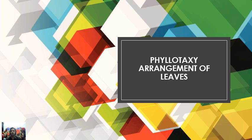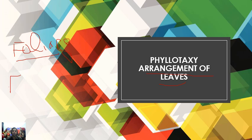Next is phyllotaxy, which is the arrangement of leaves on the stem. There are two types of leaves: foliage leaves, which are the green leaves, and floral leaves, which include petals, sepals, and carpels. The arrangement of foliage leaves is called phyllotaxy, the arrangement of floral leaves in a bud is called prefoliation, and the arrangement of floral parts is called aestivation.